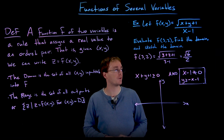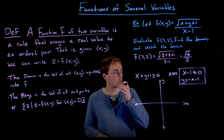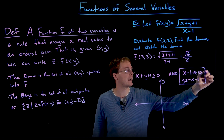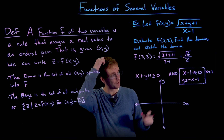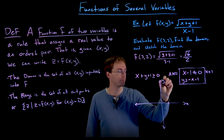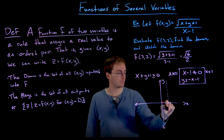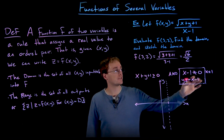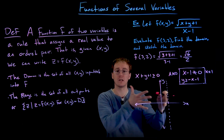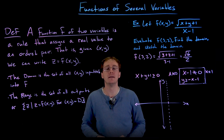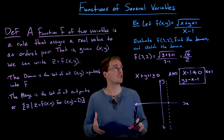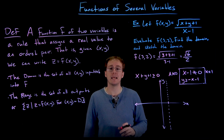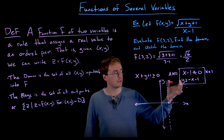To sketch the domain of this two-variable function, we need to represent both constraints. First, consider x not equal to one — the graph of x equals one is just a vertical line through x equals one, and we must avoid this line entirely. We must also avoid points x comma y that make the square root quantity negative, which means y must be greater than or equal to negative x minus one.